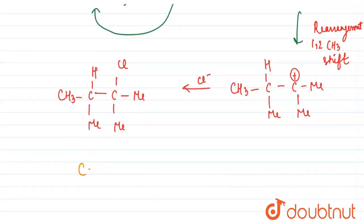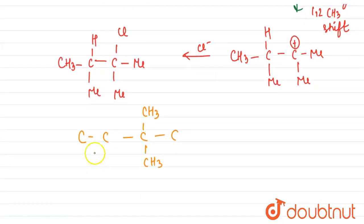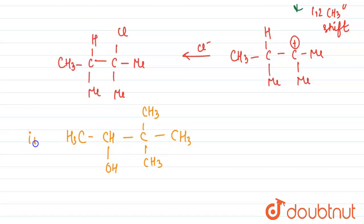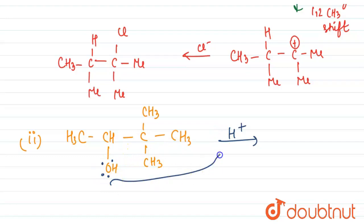Once again we have the same carbon skeleton — 3,3-dimethyl — but now instead of a double bond, we have an OH group at the second carbon. There is also a CH3, another CH3, and one H. This is our second compound's reaction.